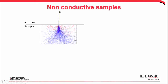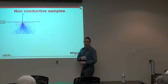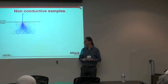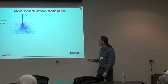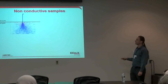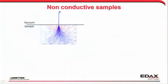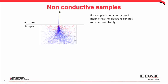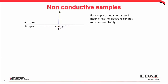For non-conductive samples: the electron beam hits the sample and the electrons spread out inside it. This is the Casino software, a Monte Carlo simulation of electron trajectories — simulated at 15 kV. The electrons spread down through the sample; some escape again. Ideally they go to ground via the stage and are collected. The problem is if we have a non-conductive sample, these electrons can't move around — that's the essence of the sample being non-conductive. The electrons are basically stuck where we put them, so you have a bunch of charged particles stuck inside your material.